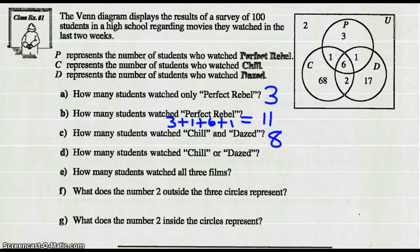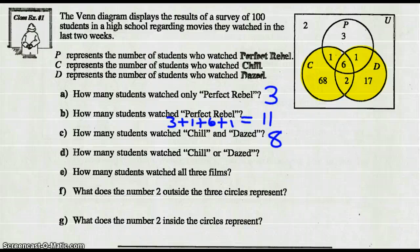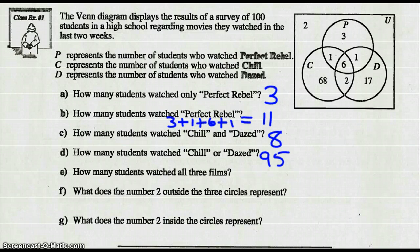How many watched Chill or Dazed? Well, that's the union. You could add all those numbers up — 68 plus 1 plus 6 plus 1 plus 2 plus 17 — or you could say there are 100 students, and only the 3 and 2 outside did not watch Chill or Dazed. So 100 minus 3 minus 2 gives us 95. That's a little simpler math.